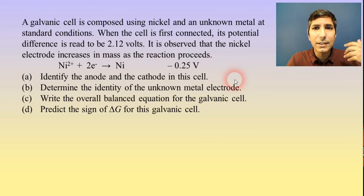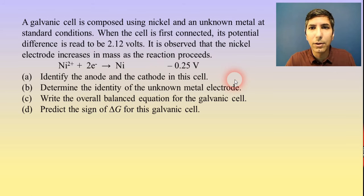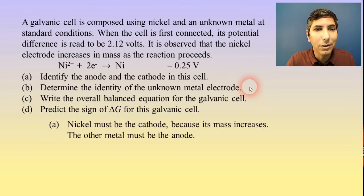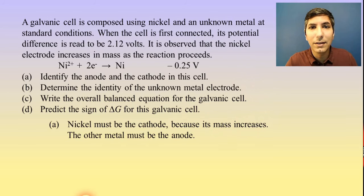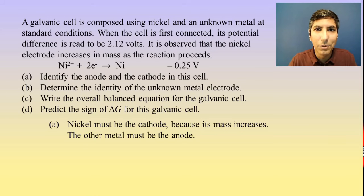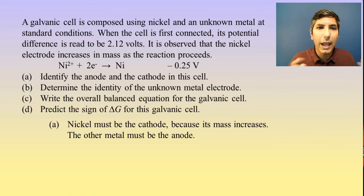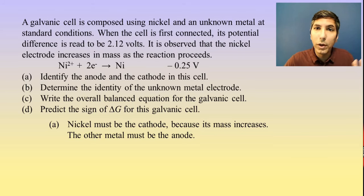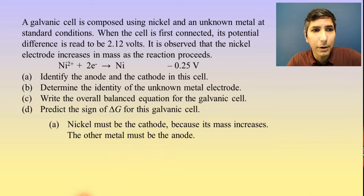It says it is observed that the nickel electrode increases in mass as the reaction proceeds — that's the giveaway. Because it's the cathode, the metal cathode, that is going to increase in mass. So that means nickel has to be the cathode. Like we said in the last video, the cat gets fat — that's a little mnemonic aid that might help us remember that the cathode increases in mass. So the other metal, which we don't know what it is yet, has to be the anode.